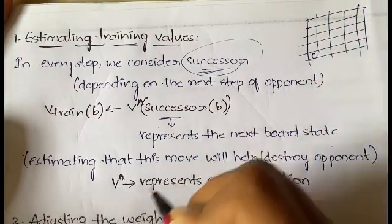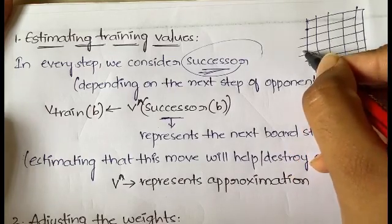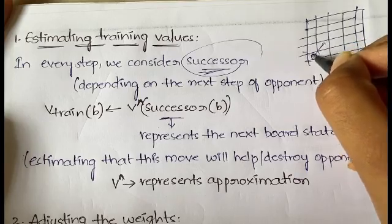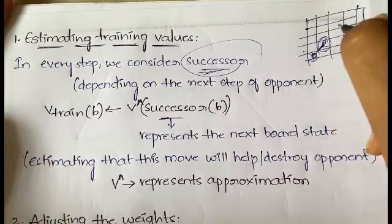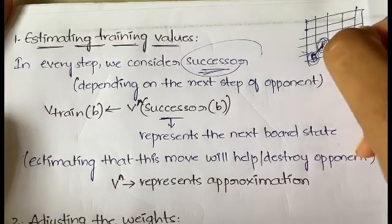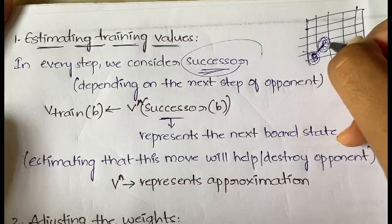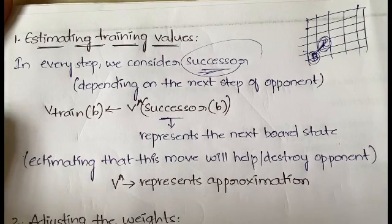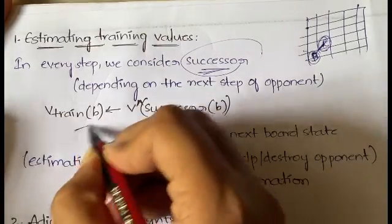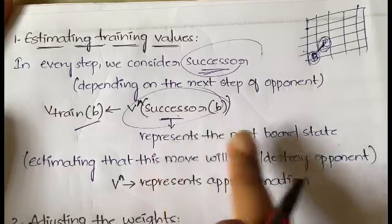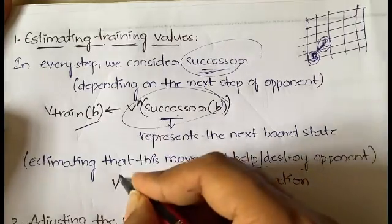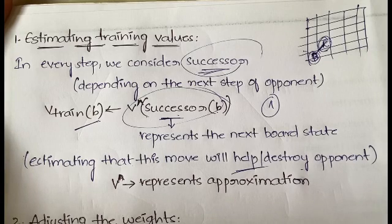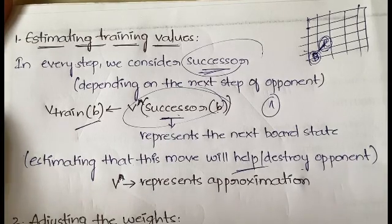In checkers you can only move diagonally forward. If there is a red coin in your path you can destroy it. The red player will predict whether the move being made by black will be helpful or harmful. So v_train(b) is assigned the value of v_hat(successor(b)), where the cap symbol represents the approximation. At each step we think about the successor and estimate based on that. That completes the first step: estimating the training values.